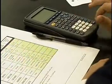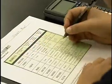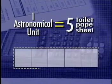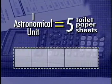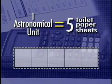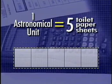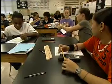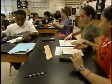This is your chance to put your math skills to the test. Next, you will complete column five on the scale model chart. The scale needed to complete this column is one AU, or astronomical unit, equals five toilet paper sheets. Groups should check each other's work to make sure all values are correct.